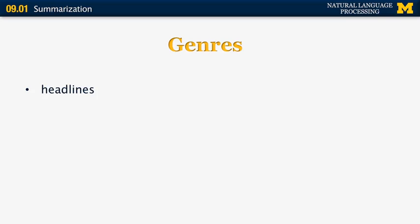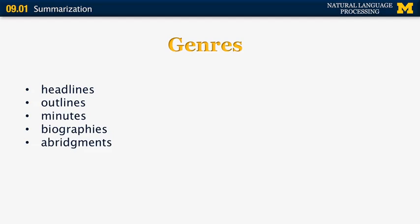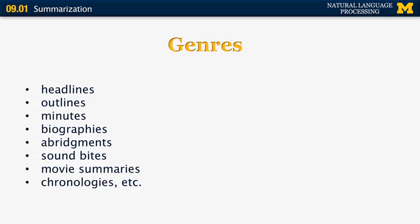There are many different genres of summaries. We have headlines — a headline can be construed as a very short summary of a news story. An outline can be produced from many different genres of documents: it could be an outline of a book, a meeting, an encyclopedia entry, a paper, and so on. There can also be minutes of meetings, biographies of people in obituaries or plain biographies, abridgments of books for different audiences, soundbites from interviews or events, movie summaries, chronologies, and so on. Credit for this taxonomy goes to Inderjit Mani and Mark Mabry from their 1999 paper.